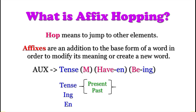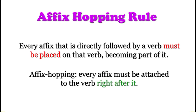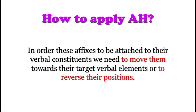The affix hopping rule states: every affix that is directly followed by a verb must be placed on that verb, becoming part of it. In other words, the rule of affix hopping tells us that every affix must be attached to the verb right after it. In order for these affixes to be attached to their verbal constituents, we need to move them toward their target verbal elements, or to reverse their positions.